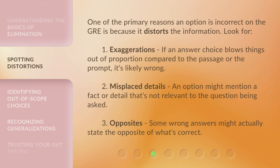One of the primary reasons an option is incorrect on the GRE is because it distorts the information. Look for: 1. Exaggerations — if an answer choice blows things out of proportion compared to the passage or the prompt, it's likely wrong. 2. Misplaced Details — an option might mention a fact or detail that's not relevant to the question being asked. 3. Opposites — some wrong answers might actually state the opposite of what's correct.